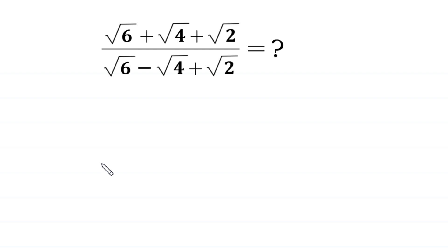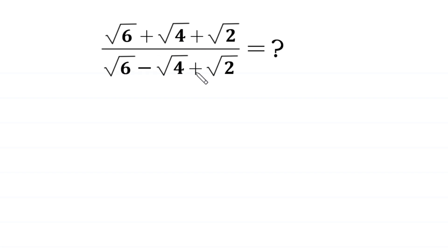Hello, welcome to how to solve this very nice square root math simplification problem. We have the square root of 6 plus square root of 4 plus square root of 2, divided by square root of 6 minus square root of 4 plus square root of 2.